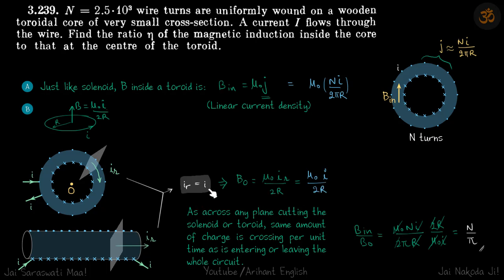Now why iᵣ is equal to i? Again, as across any plane cutting the solenoid or toroid, same amount of charge is crossing per unit time as is entering or leaving the whole circuit. So what charge per unit time is entering, same charge per unit time is crossing and same charge per unit time is leaving the circuit, same here also.